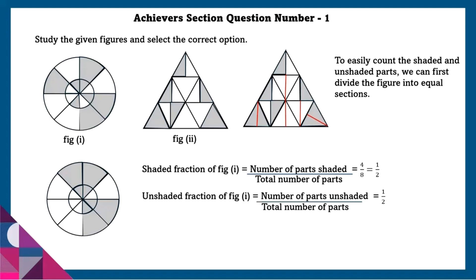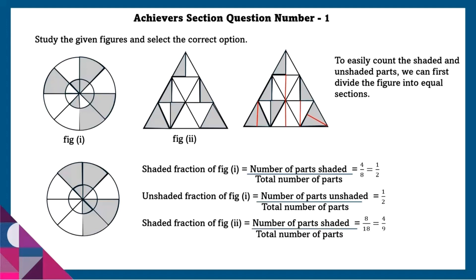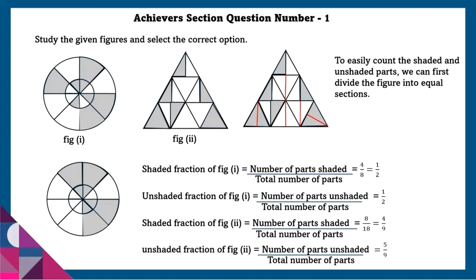Unshaded fraction of figure 1 is equal to number of parts unshaded by the total number of parts, which is equal to 1 by 2. Shaded fraction of figure 2 is equal to number of parts shaded by the total number of parts, which is 8 by 18, reduced to 4 by 9. Unshaded fraction of figure 2 is equal to number of parts unshaded by total number of parts, which is equal to 5 by 9.